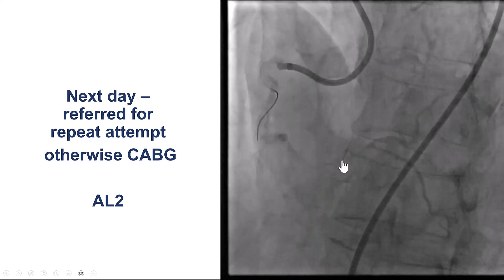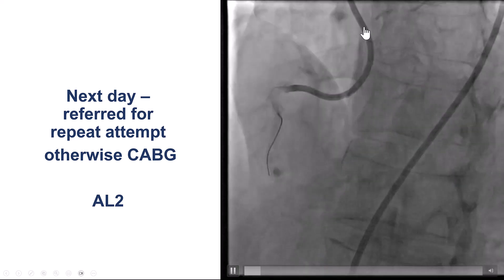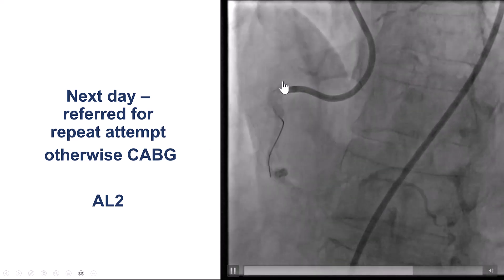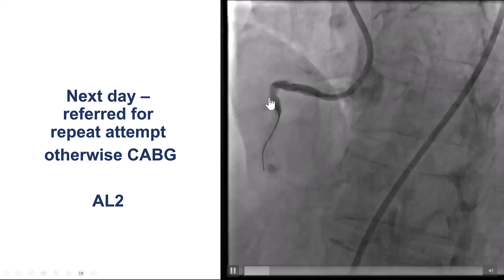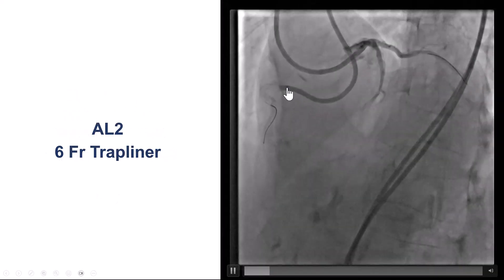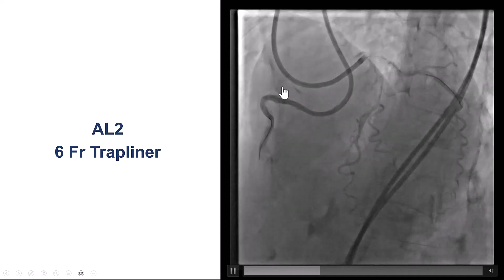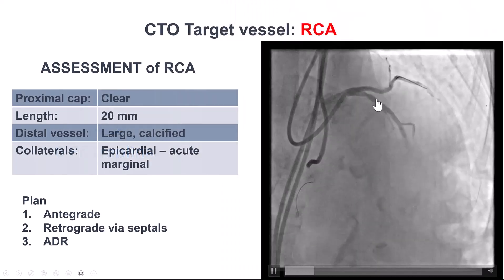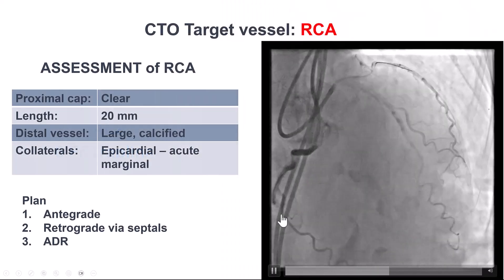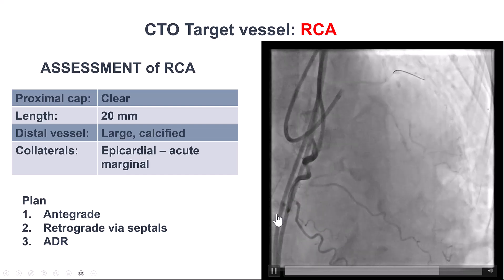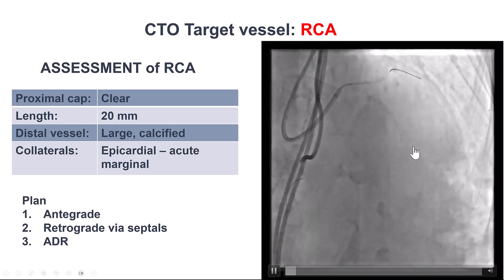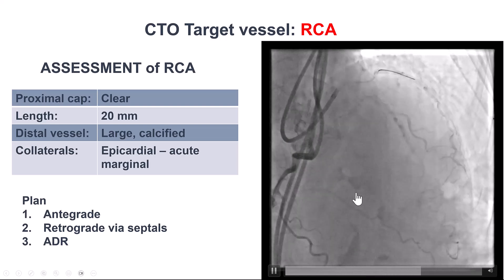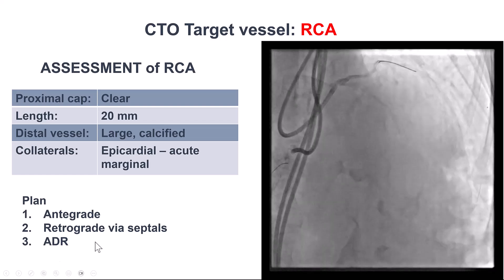This time, we have a different setup. We have an 8 French AL-2 guide, where the tip goes almost all the way to the top of the Seferitz crook, providing stronger support. We also started with a 6 French Trapliner guide extension upfront. The plan was to first try antegrade, and if that failed, try retrograde to the septals — even though we did not see a continuous connection from the septals to the PDA and posterolateral — and if that failed, to do antegrade sub-intimal entry.